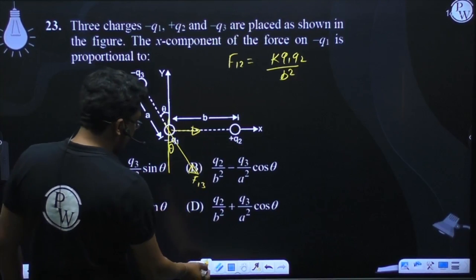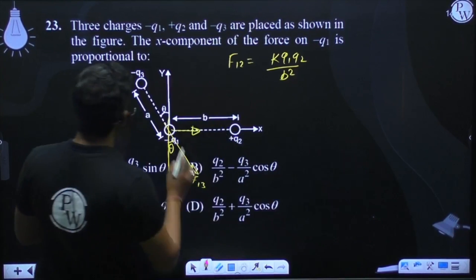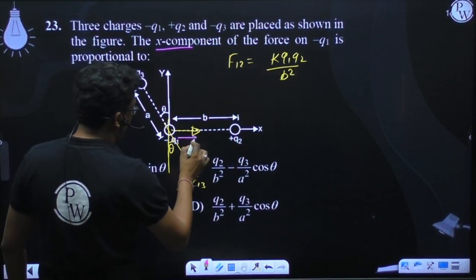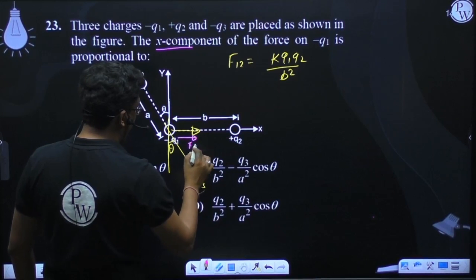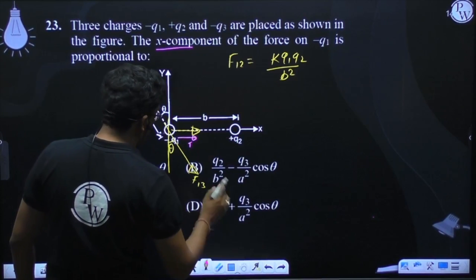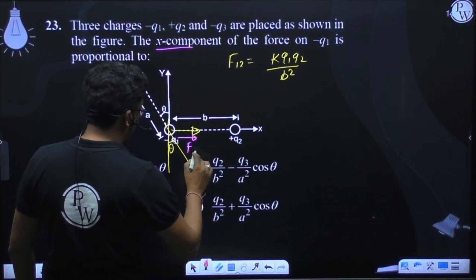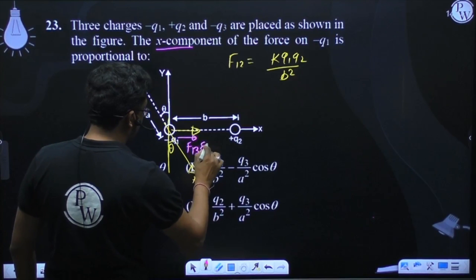This component will also come in this direction. What do we need to do? The x-component. This component will also come in this direction. It will be F1 3 sin theta.